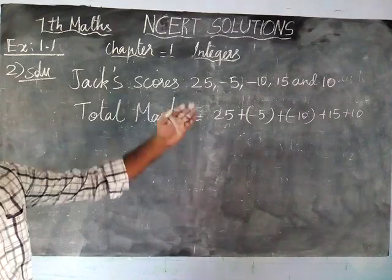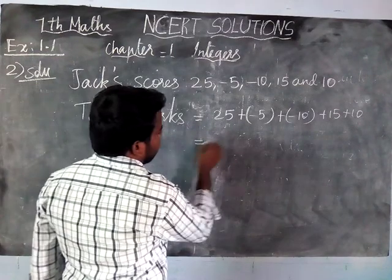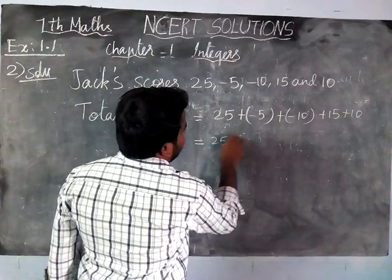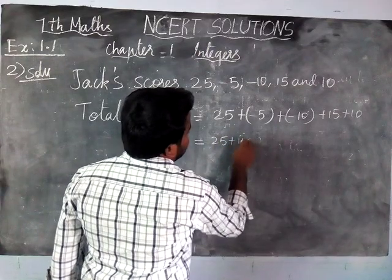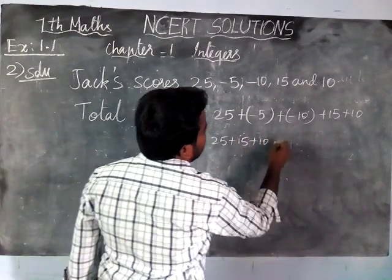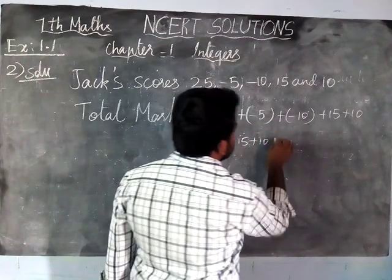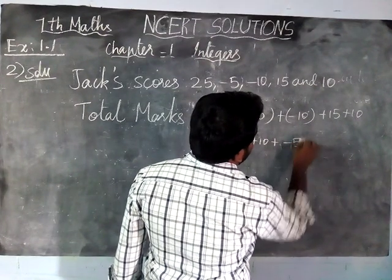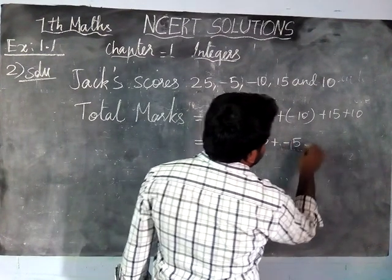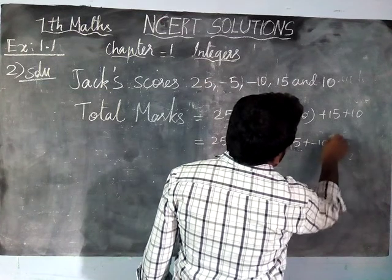We have to add all the positive numbers. We are rearranging the numbers: 25, plus 15, plus 10. Next, minus 5, plus minus 10.